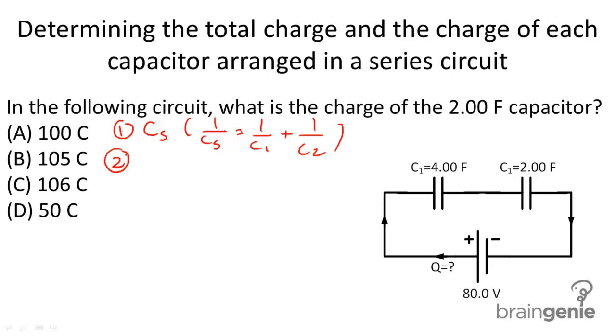Step two is once we know the equivalent capacitance, we're going to use the equation for capacitance that we learned in the previous topic, C equals charge divided by potential difference.